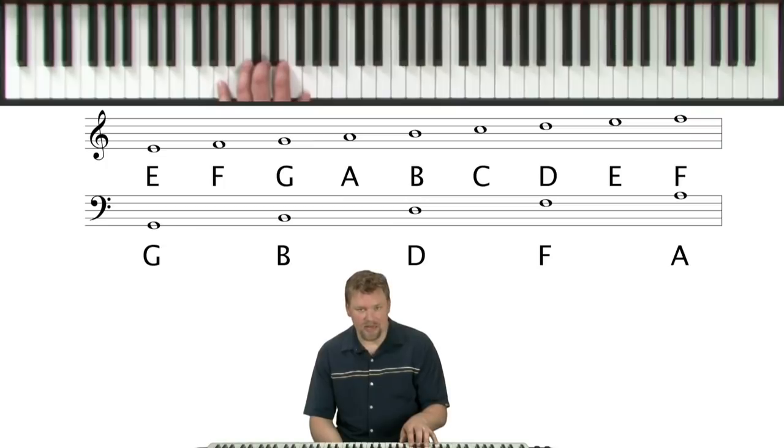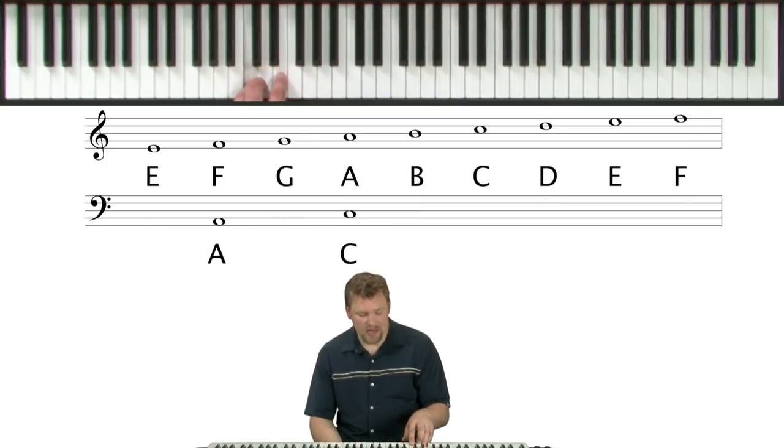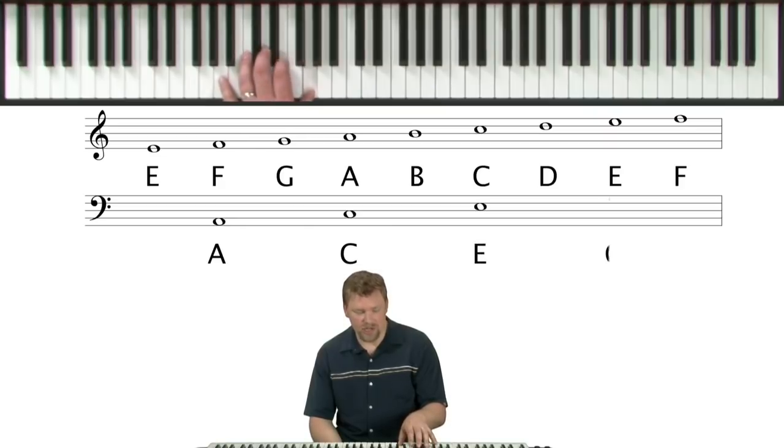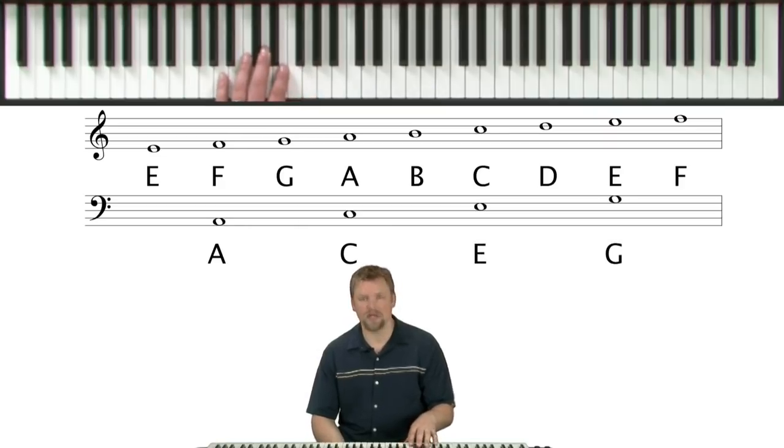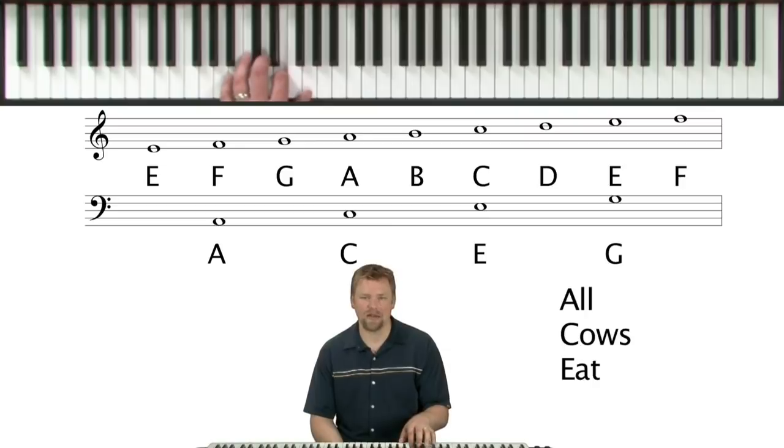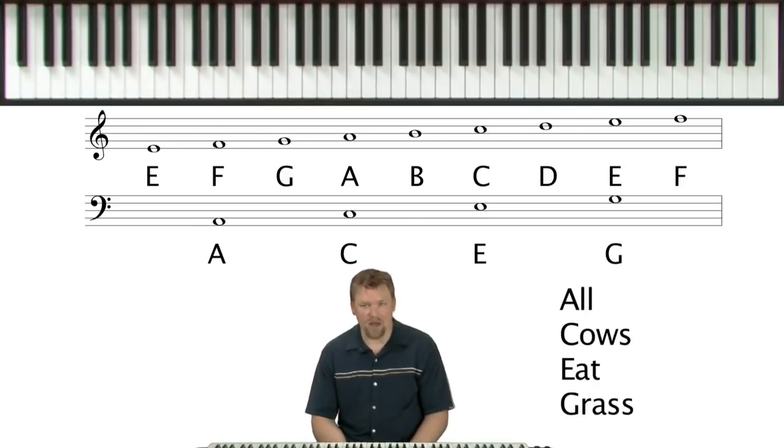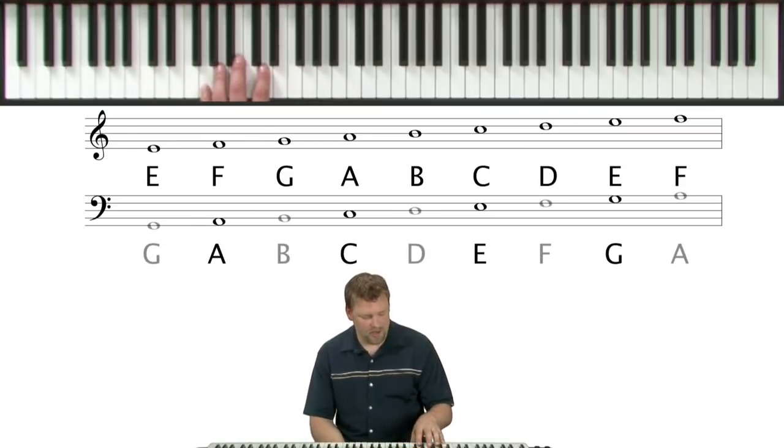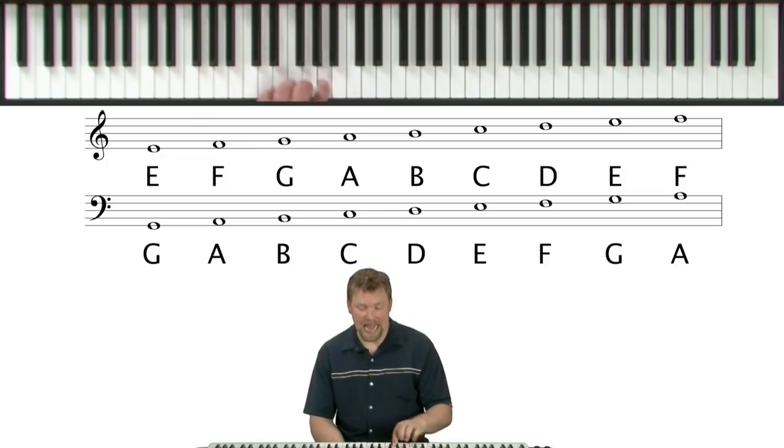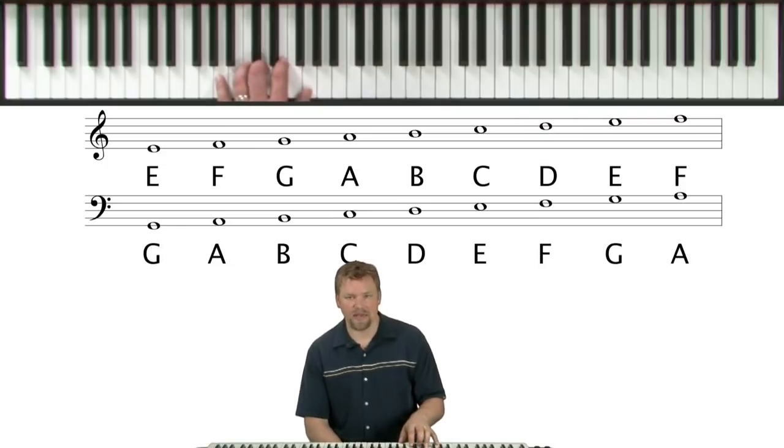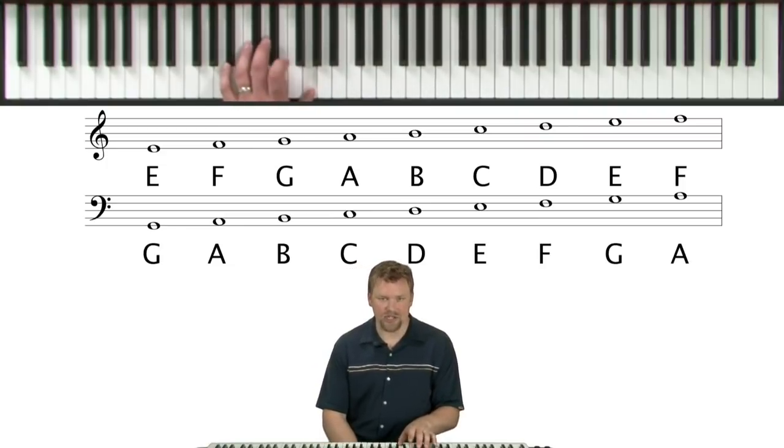And then, we get to the spaces. So, we've got A, C, E, G. And you could use something like, all cows eat grass, just to help you remember that. So, we've got G, B, D, F, and A. Those are the lines. And now for the spaces: A, C, E, and G.